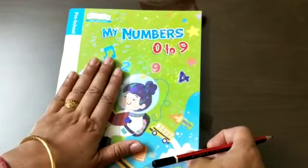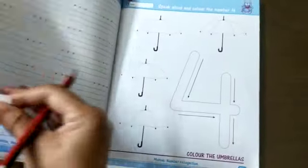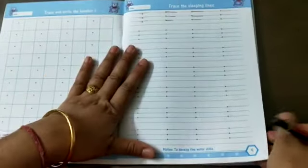Good morning everyone. Today we will work from this book, My Number Zero to Nine. This is a math book. We have done till page number eight, so today's work is from page number nine and page number ten.